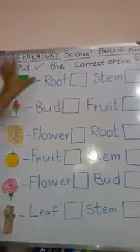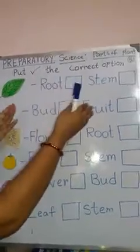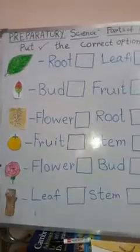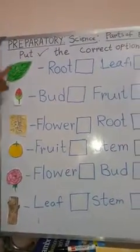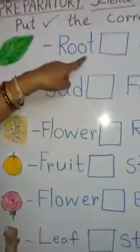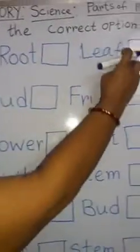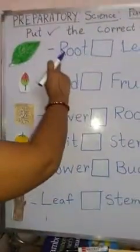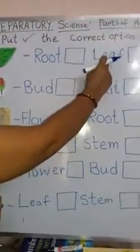Already we know the spellings. Now we identify which one has which spelling. We know r-o-o-t root, l-e-a-f leaf.